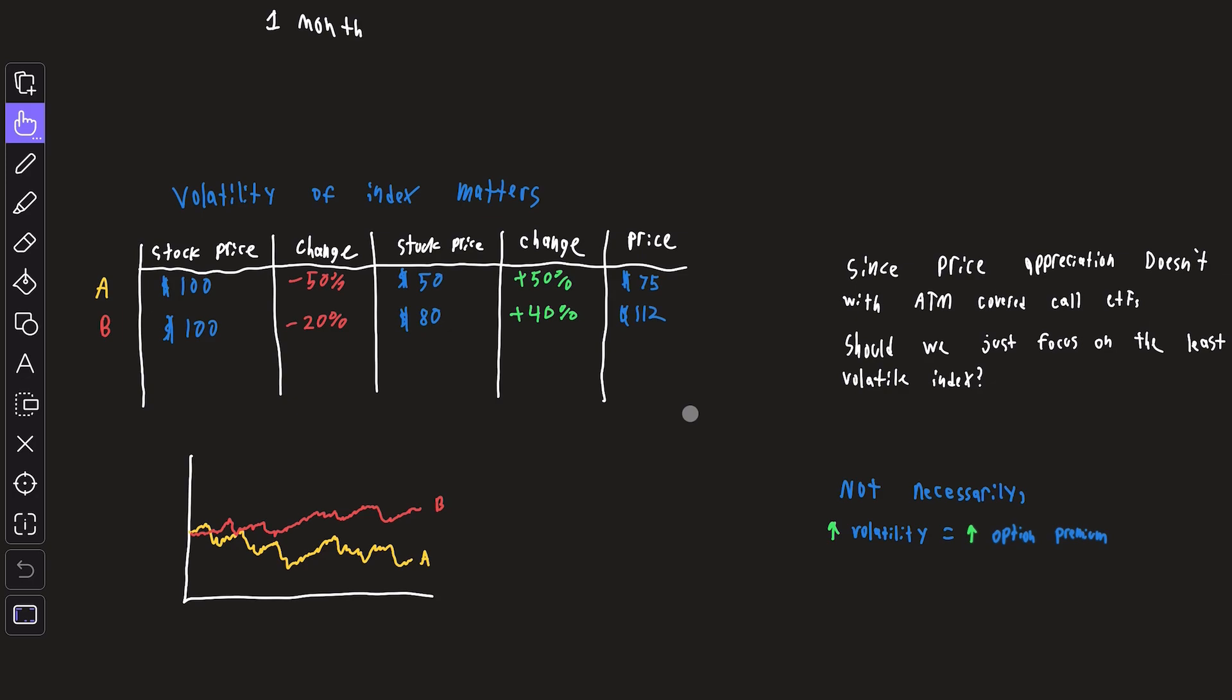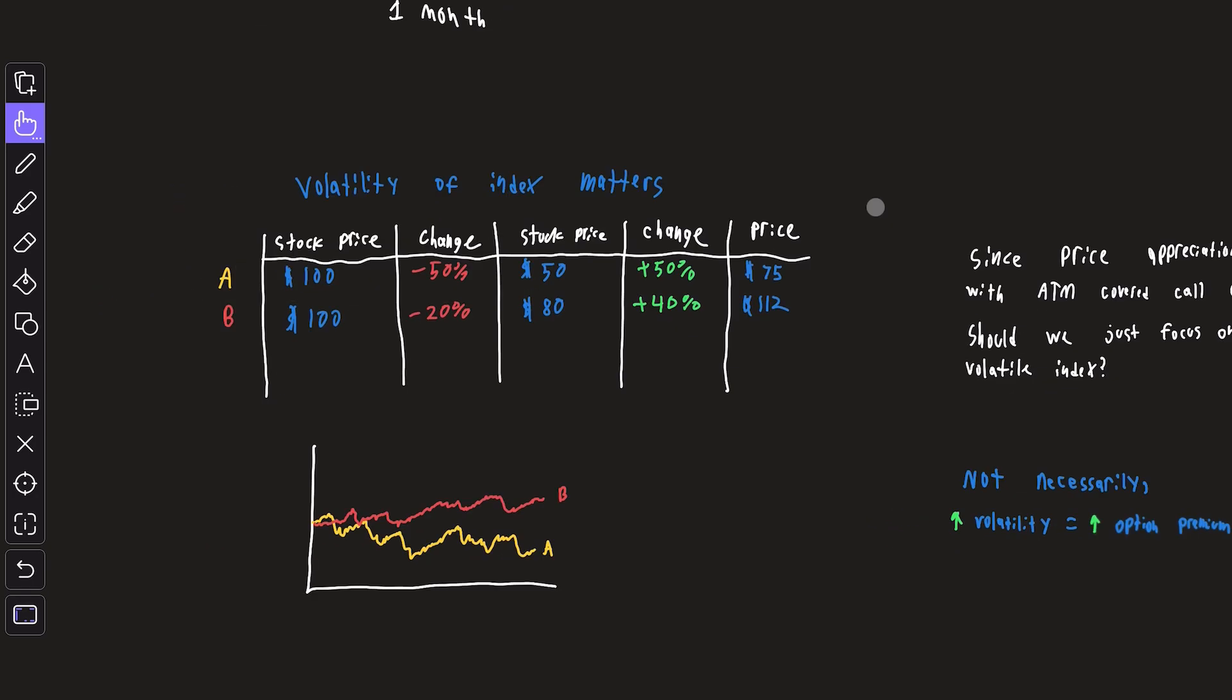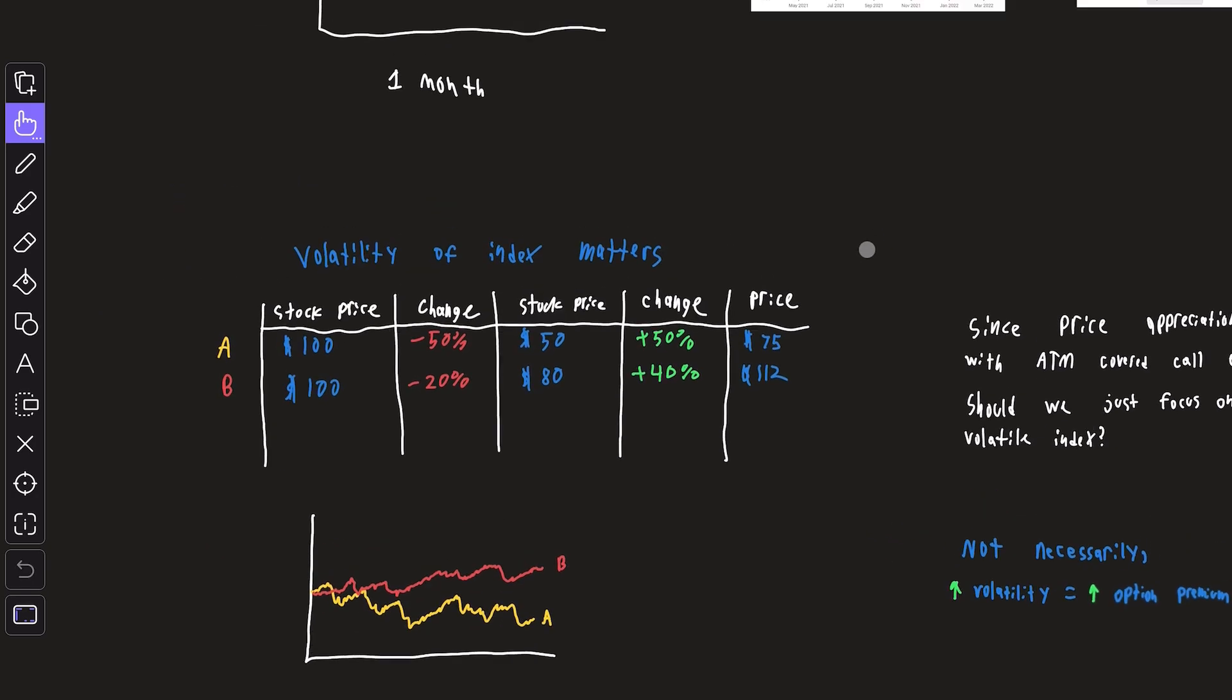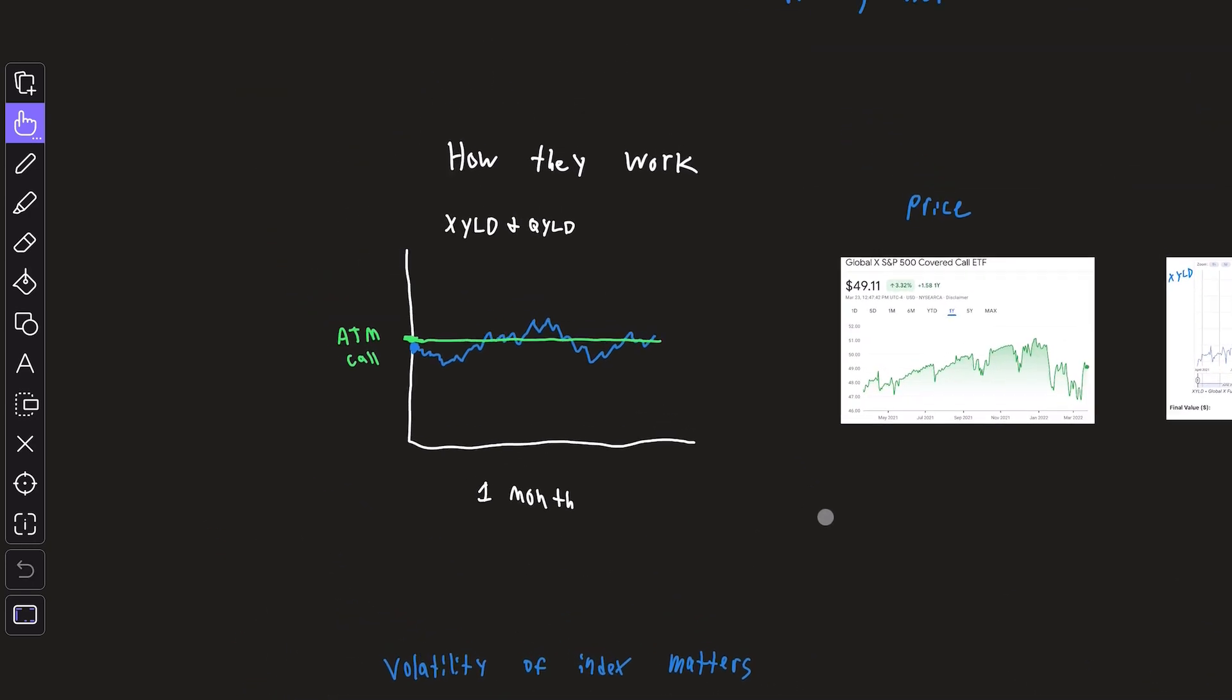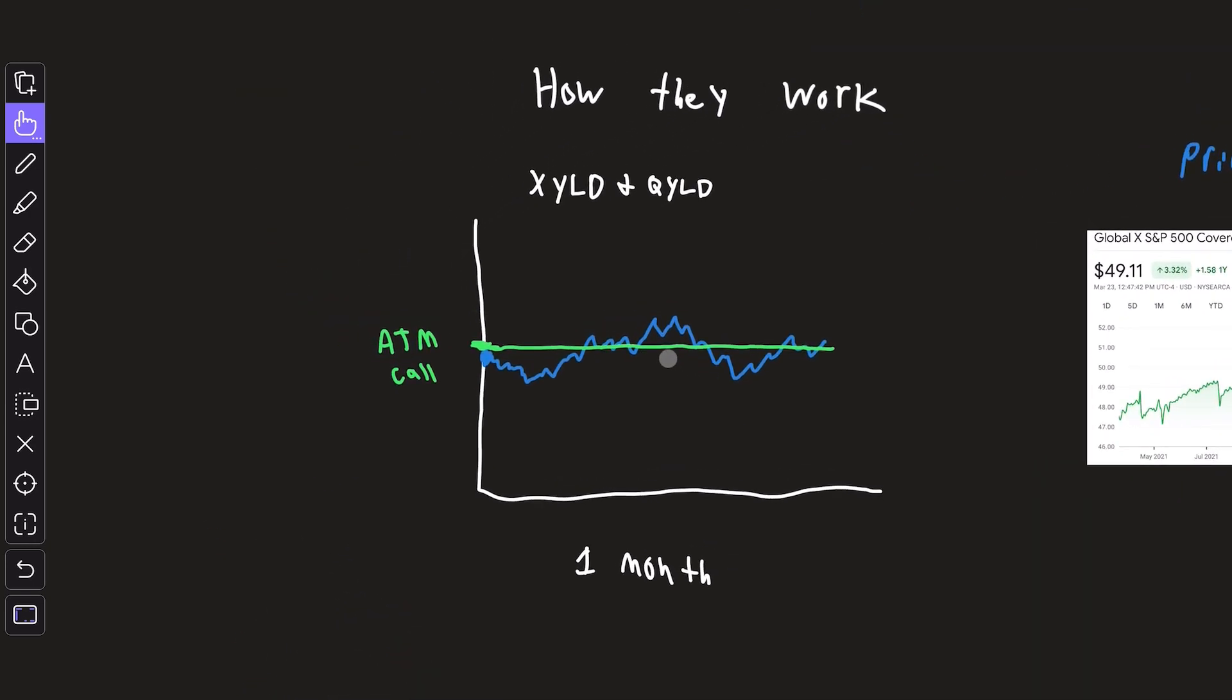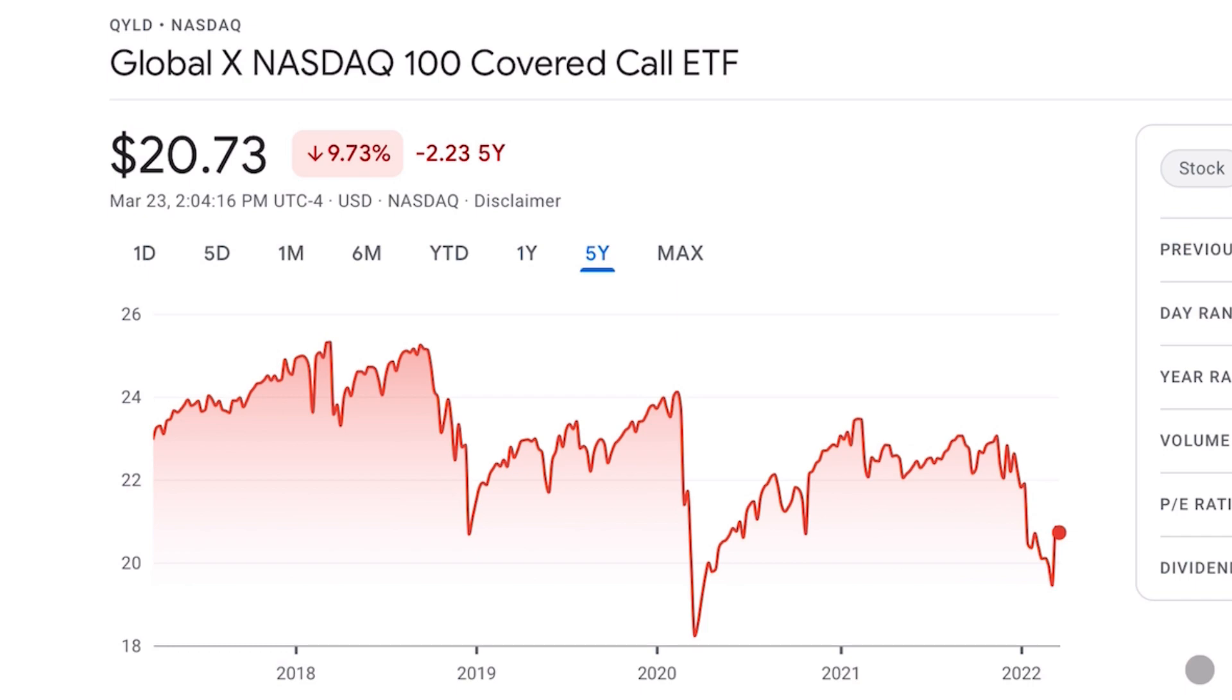And there's a simple explanation to this: yes, volatility equals higher dividend income. However, too much volatility can cause the ETFs to never fully recover because they do not participate in any upward price action. And in my opinion, that's what's happening with QYLD. It's simply too volatile and has crashes too often for this strategy to work.